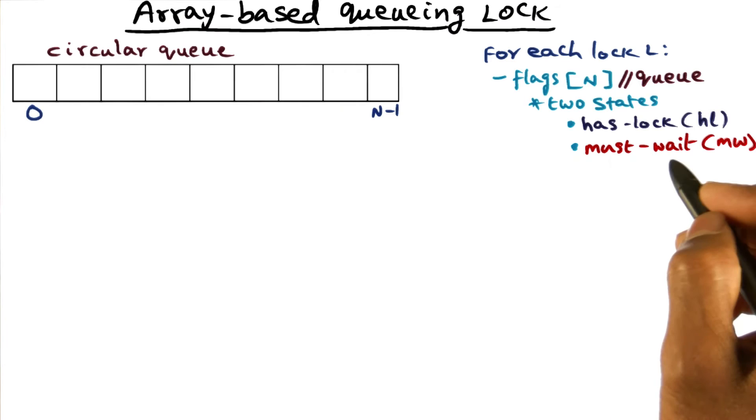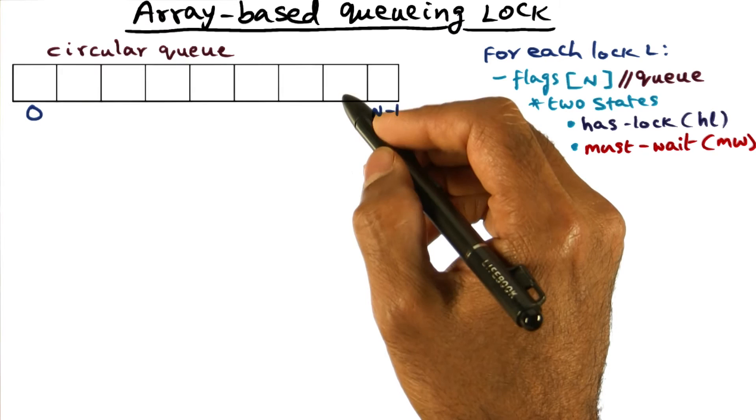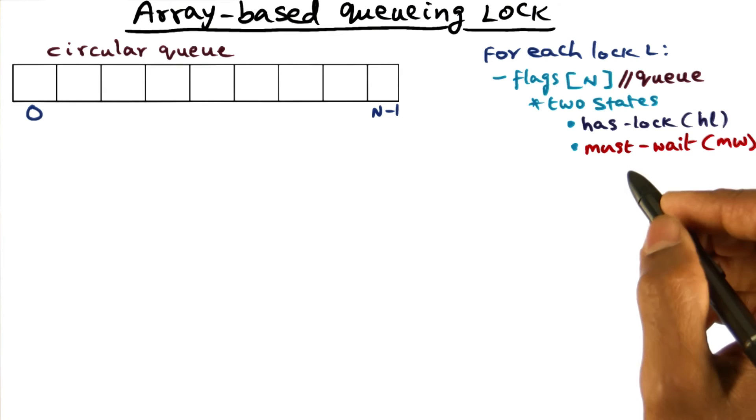On the other hand, must-wait is indicating that if a processor has must-wait as the entry in this particular element of the array and is waiting on this particular slot, that means that processor has to wait. You guessed it.